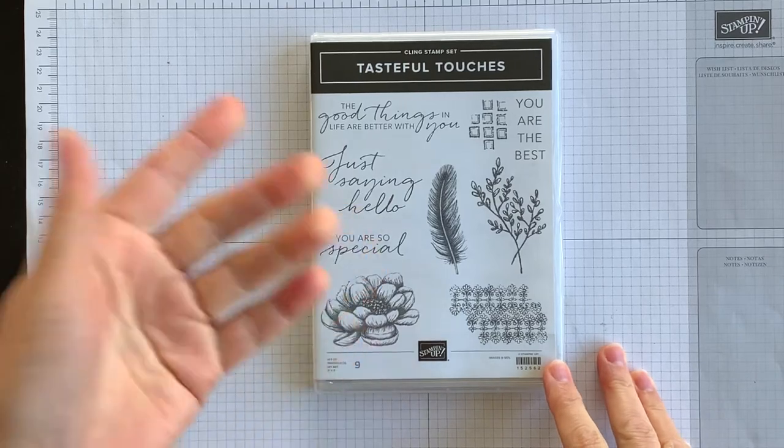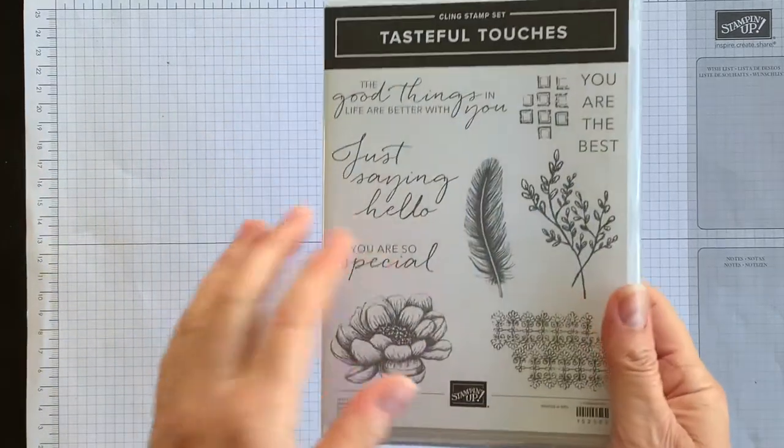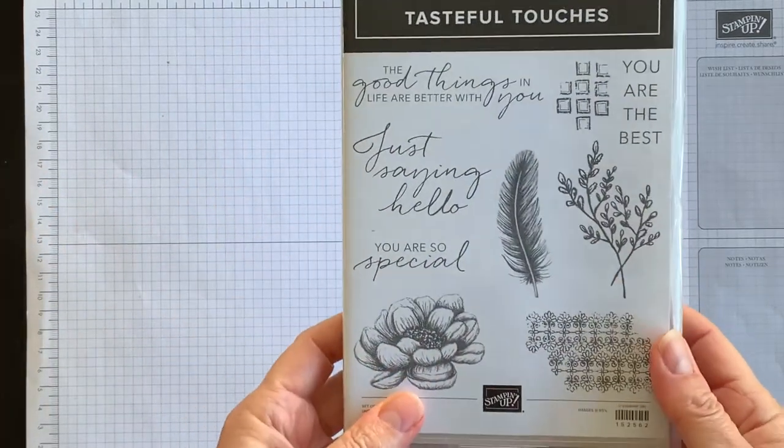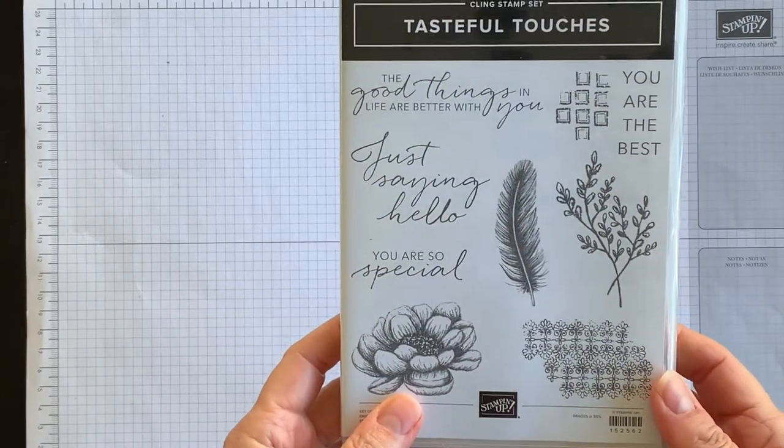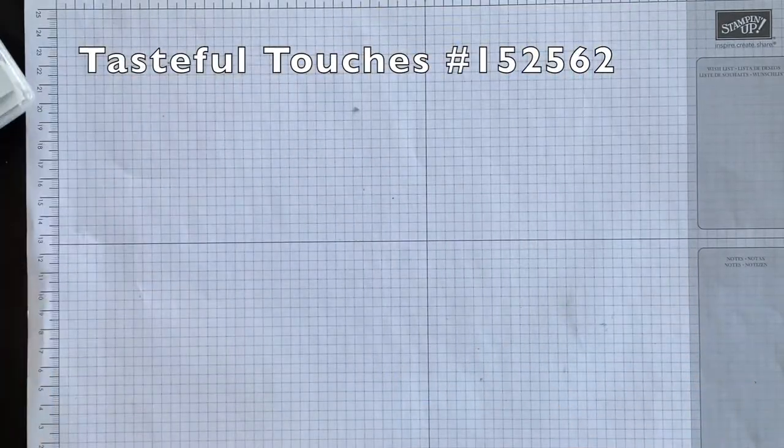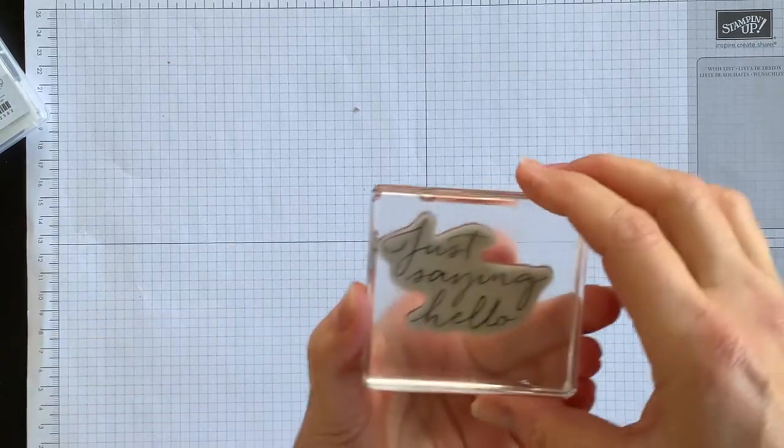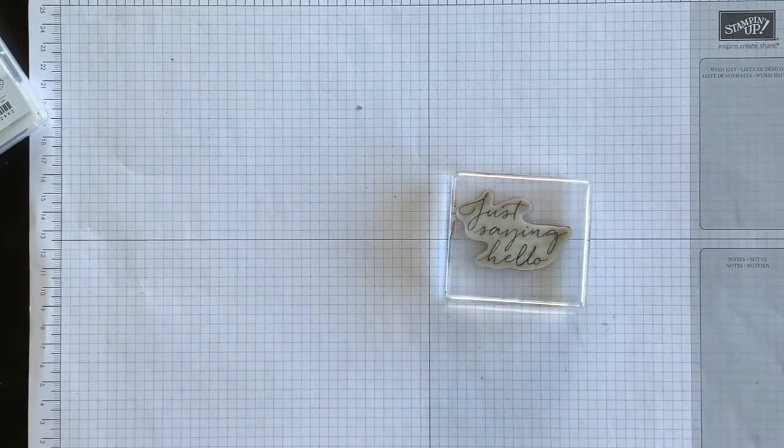I am going to create a friendship card, or it could be a birthday card, using the Tasteful Touches stamp set. So the first thing I'm going to start off with is the phrase that says 'just saying hello'.